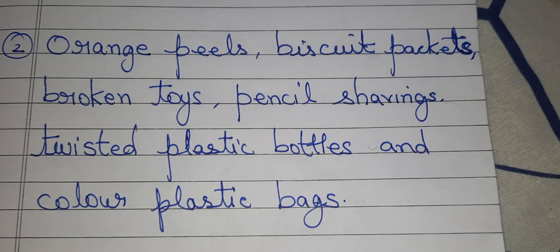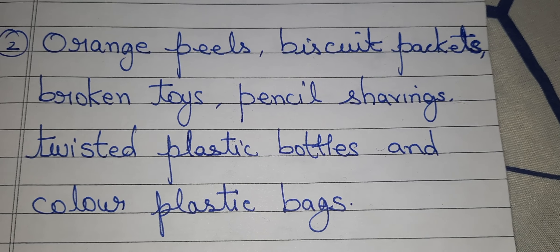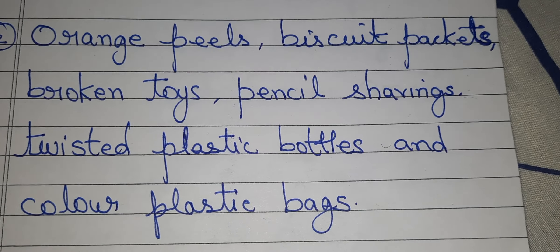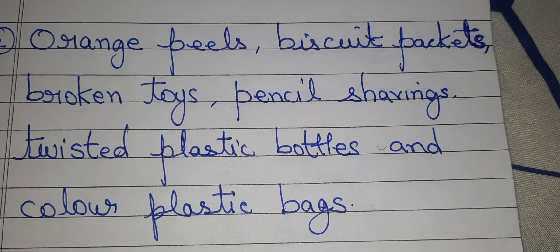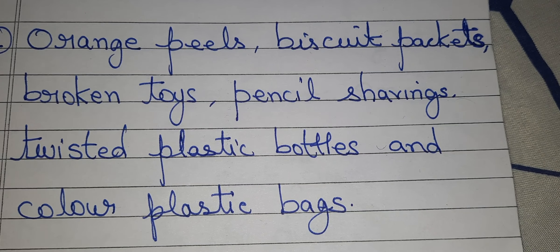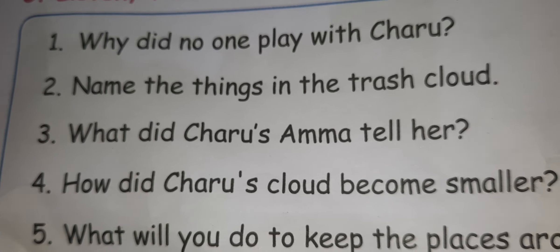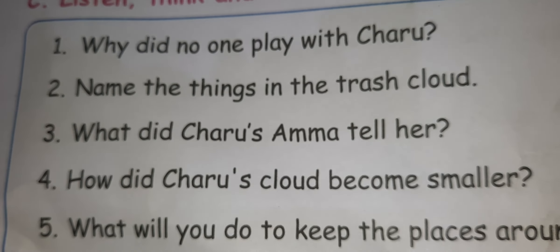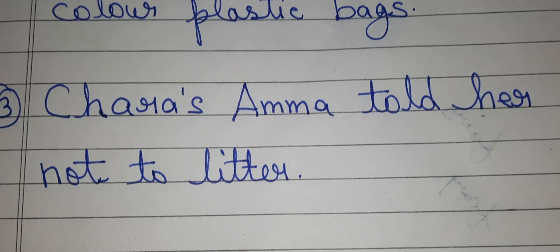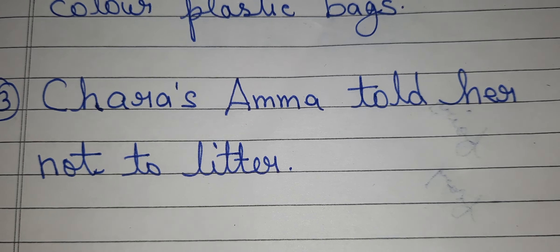The things in the trash cloud are: orange peels, biscuit packets, broken toys, pencils, shavings, twisted plastic bottles, and colourful plastic bags. Third question: What did Charu's Amma tell her? Charu's Amma told her not to litter.